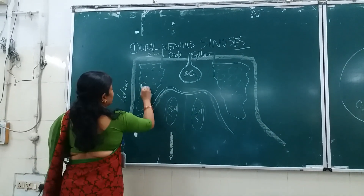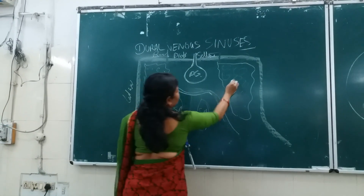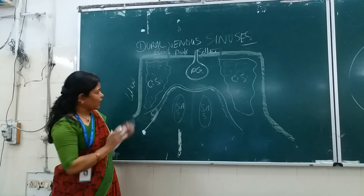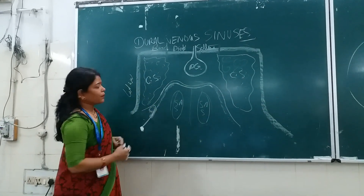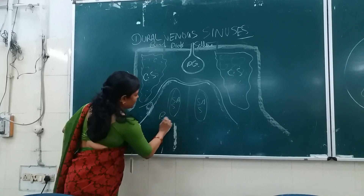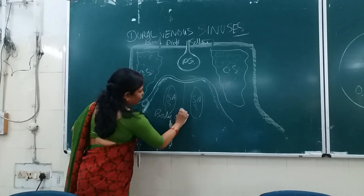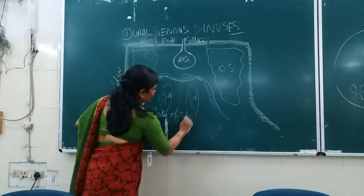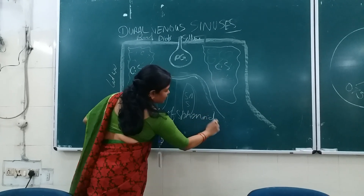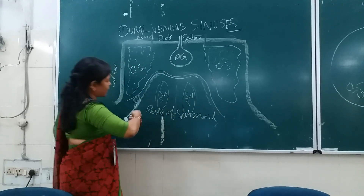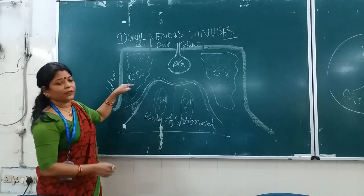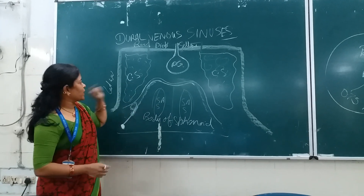This is the cavernous sinus, situated in pairs. This is the body of the sphenoid bone. This is the coronal section of the middle cranial fossa, where the cavernous sinus is situated.